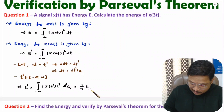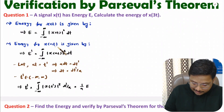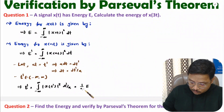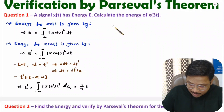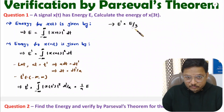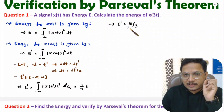So if you scale a signal as x(at), the new energy will be the actual energy divided by a. Therefore for x(3t), the energy E' equals the actual energy divided by 3. That is how energy calculation works for a time-scaled signal.